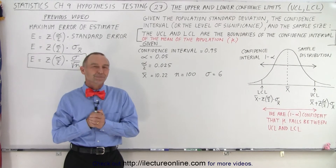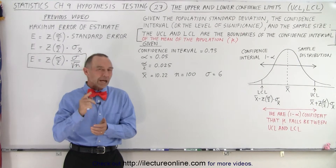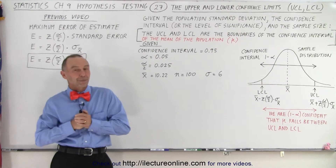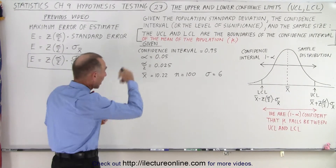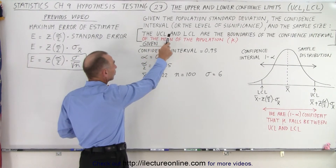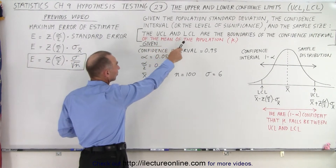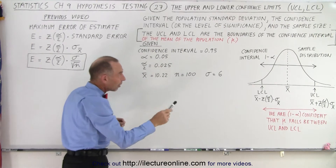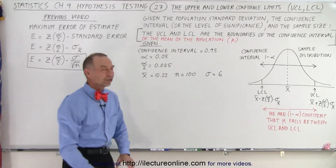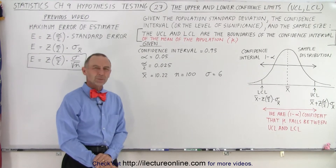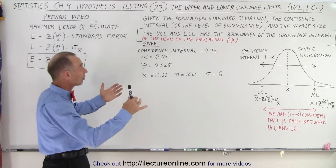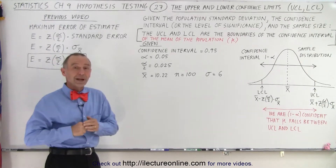Welcome to our lecture online. So what are the upper confidence limit and the lower confidence limit? By definition, the upper confidence limit and the lower confidence limit are the boundaries of the confidence interval of the mean of the population. You read that sentence and you kind of get lost — you don't quite know what you just read.